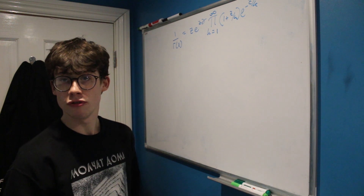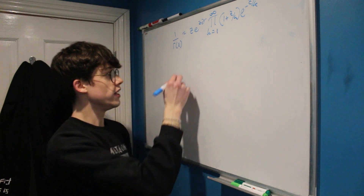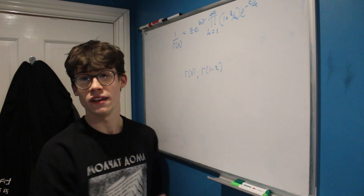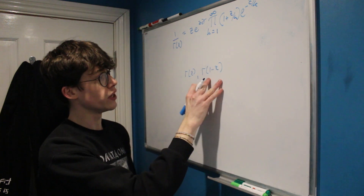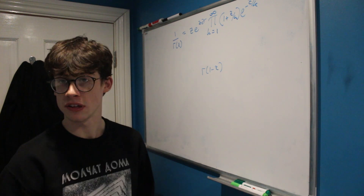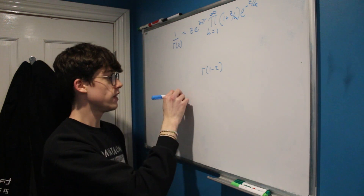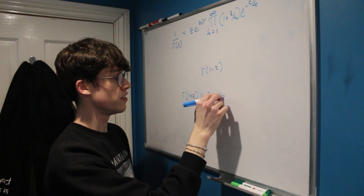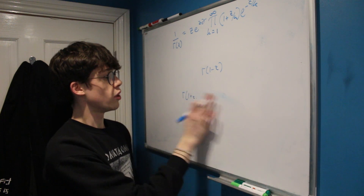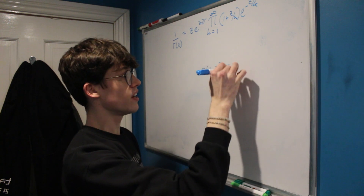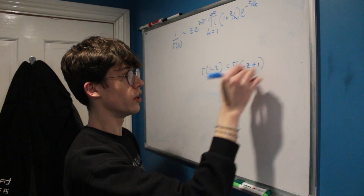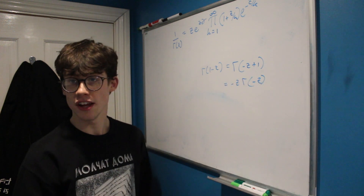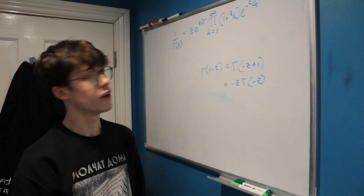With Euler's reflection formula we need to calculate not only gamma of z but also gamma of 1 minus z. To calculate this we're going to use a property of the gamma function, namely that gamma of 1 plus z equals z times gamma of z. Now gamma of 1 minus z can be written as gamma of negative z plus 1, which equals negative z times gamma of negative z.